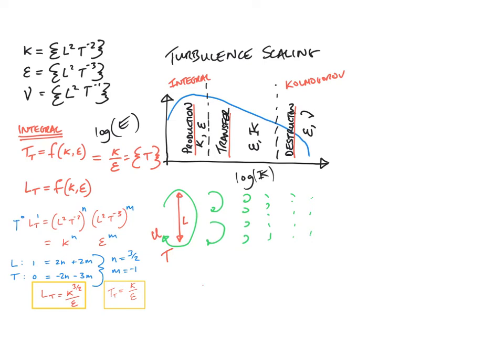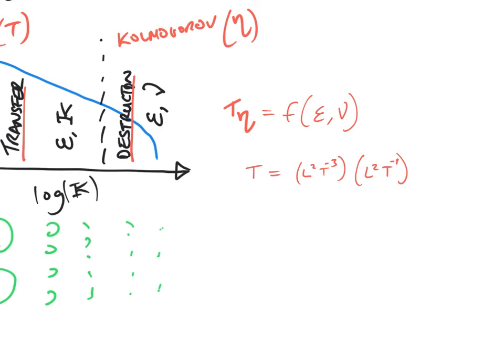So for the Komogorov timescale, this is T, and we use the subscript nu for the Komogorov scales. We write it out as before, and we note that to find the unknown powers n and m, we have to make two simultaneous equations out of the indices as follows.